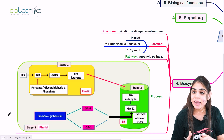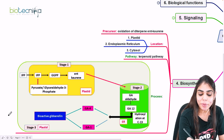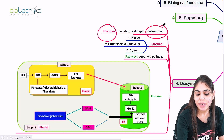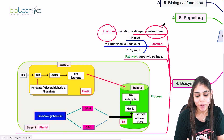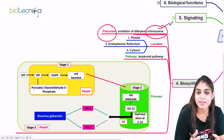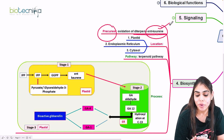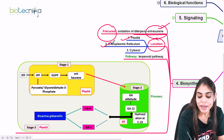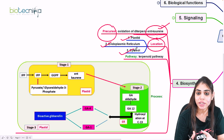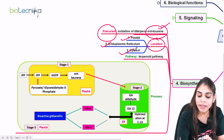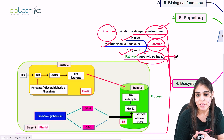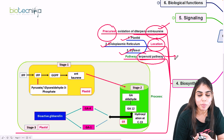Now let's come to the biosynthetic mechanism of gibberellin. The precursor molecule is ent-kaurene, which is used to initiate the biosynthetic pathway. This ent-kaurene acts as a precursor for this phytohormone, and the pathway takes place in the plastid, ER, as well as the cytosol — three different locations. The pathway name is the terpenoid pathway, through which gibberellin is synthesized in the endosperm of the seed.